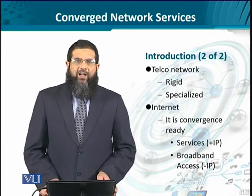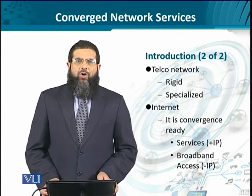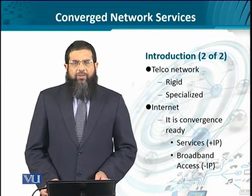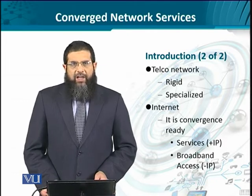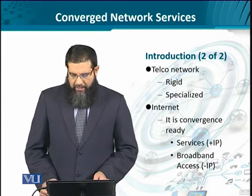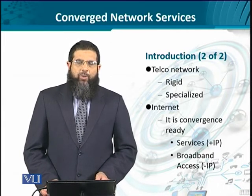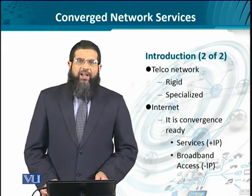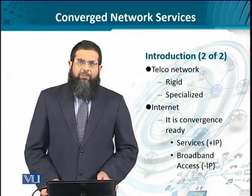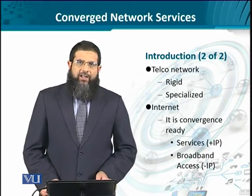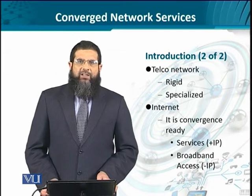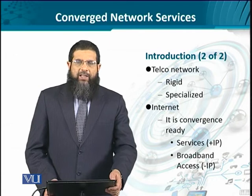Telecommunication networks were inherently rigid because they were not meant to be flexible to cater for something else — they were specialized. On the contrary, if you look at internet architecture, it is poised to be ready for convergence. Looking at the IP layer at layer 3, all the layers above IP which conform to services can be replaced with other kinds of services. Likewise, whatever access technology is available below IP — whether wireless broadband or wired broadband access — can be changed. This flexibility makes the internet the most eligible technology to take the lead in the convergence of telecommunication and internet architecture.